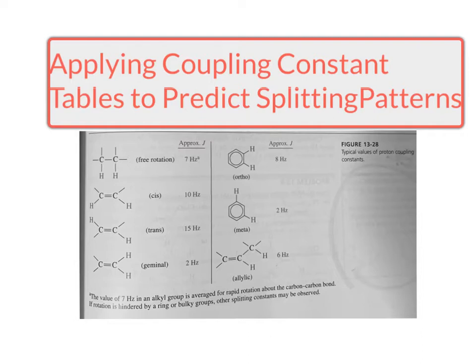On this chart, what we are looking at is typical values that have been empirically determined for proton coupling constants in a few different situations. In the upper left-hand corner, if we have two protons that are coupled to one another as they would be expected to be since they're vicinal to one another, the so-called coupling constant — this J value as it's abbreviated — would be about 7 Hertz.